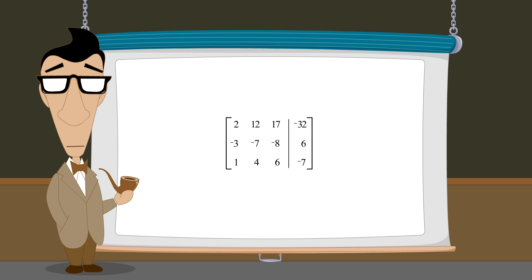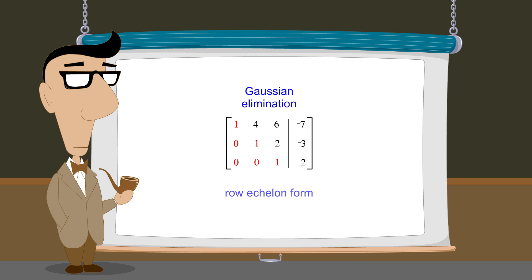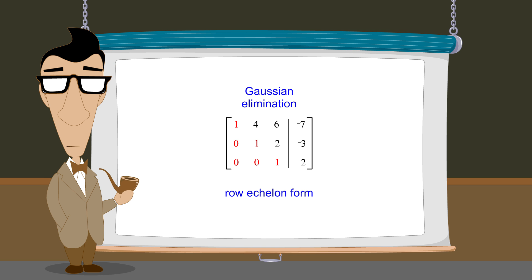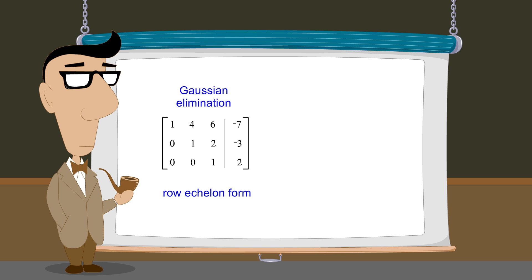In the previous lecture, we saw how, through the process of Gaussian elimination, an augmented matrix can be reduced to row echelon form. At that point, to solve the system of equations, we have two choices. One choice is to convert the matrix back into equations which are now simpler and easier to solve using back substitution.